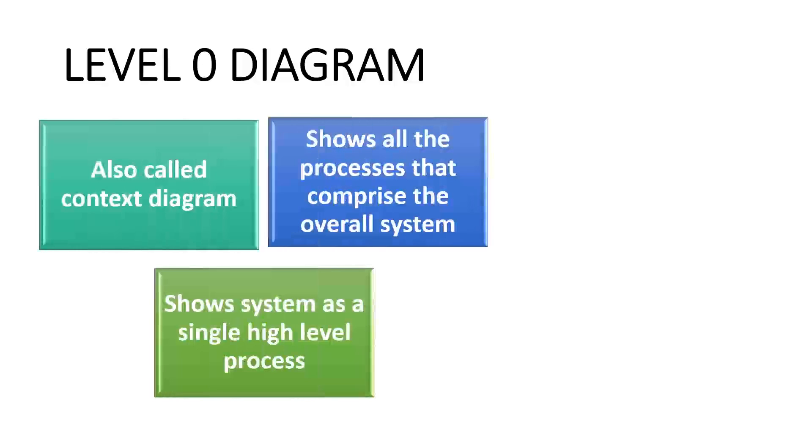DFD level 0 is also called a context diagram. It is a basic overview of the whole system or process being analyzed or modeled. It is designed to be an at-a-glance view showing the system as a single high-level process with its relationship to external entities. It should be easily understood by a wide audience including stakeholders, business analysts, data analysts, and developers.